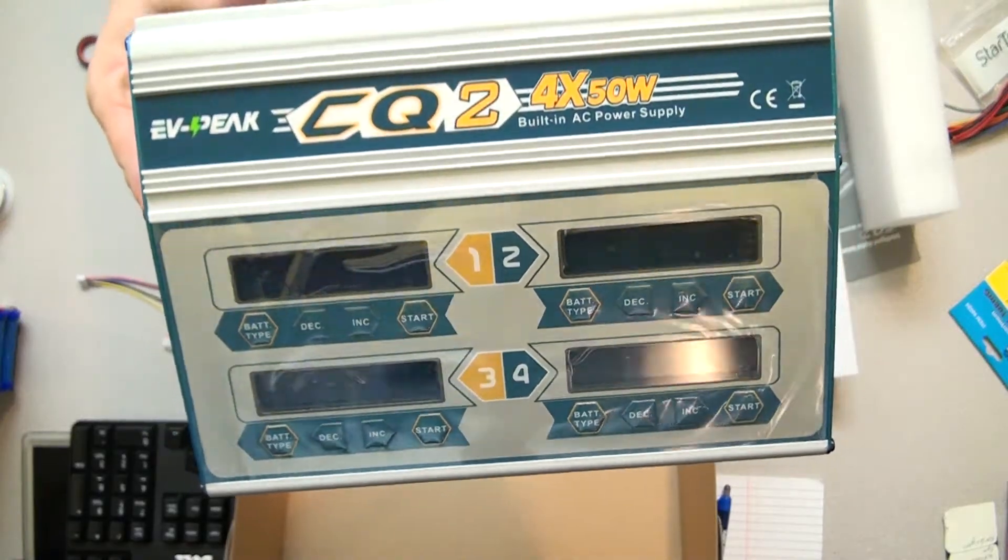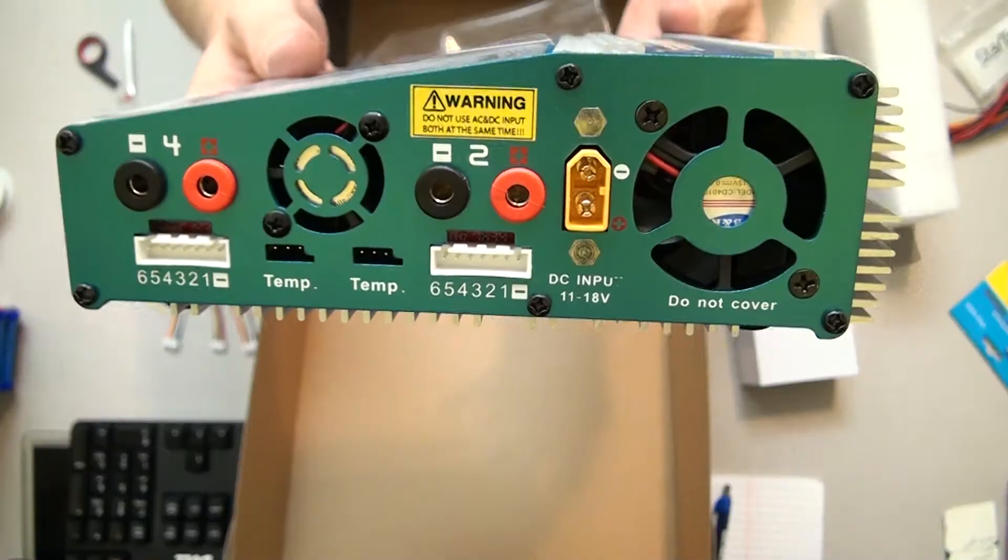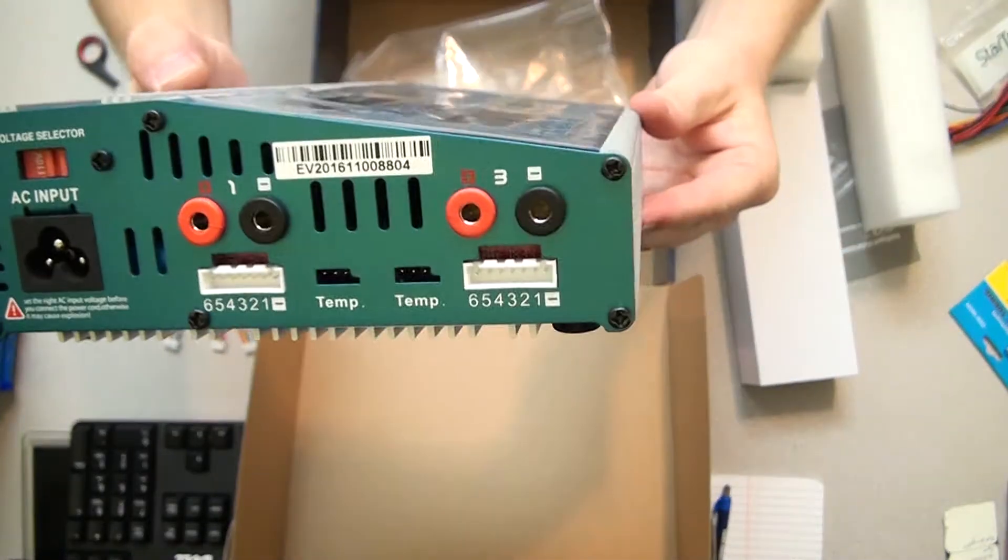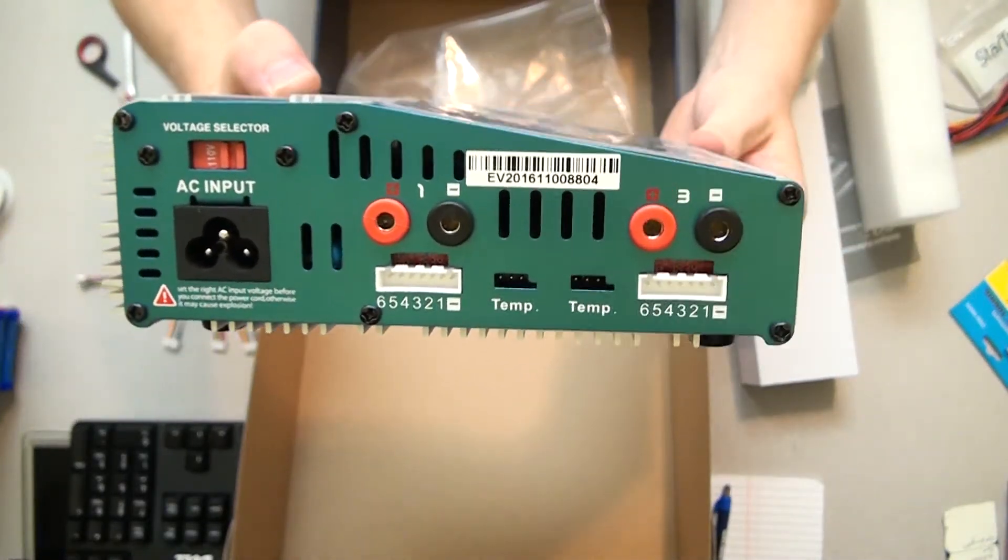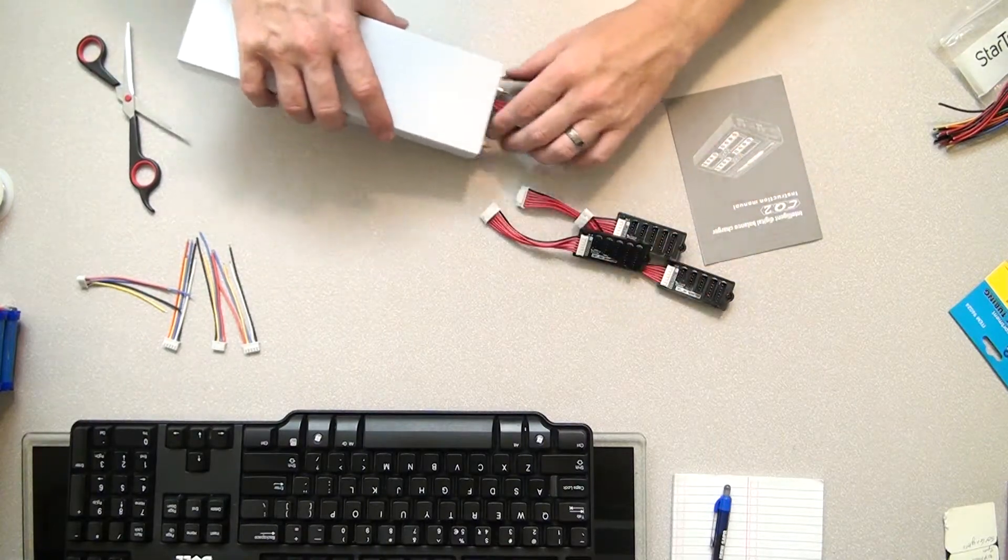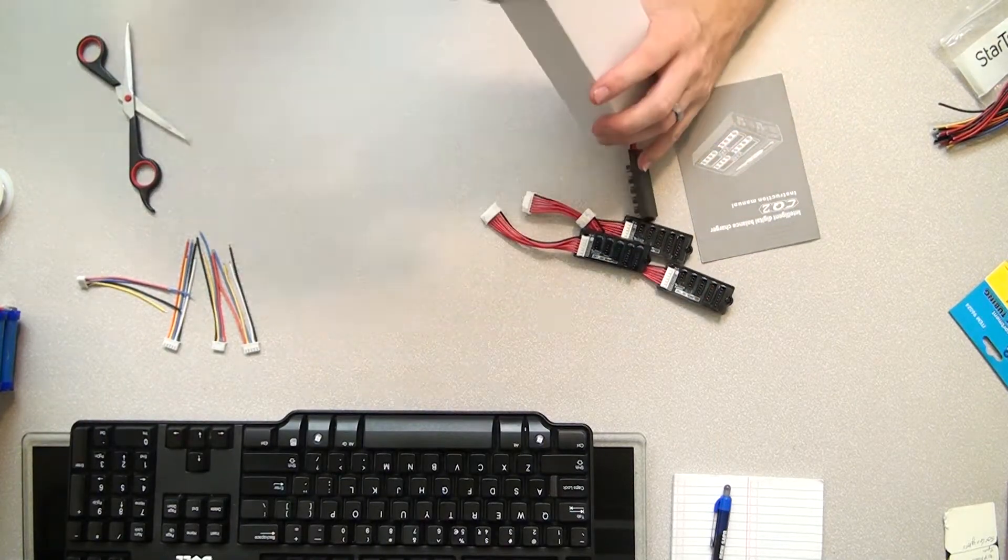I've got this EV Peak CQ2. It charges up to four 6S batteries, 200 watts overall. I'm going to split my packs up into four and three and check it out.